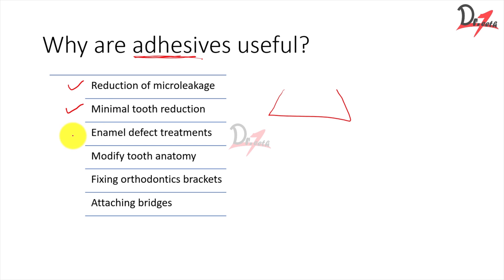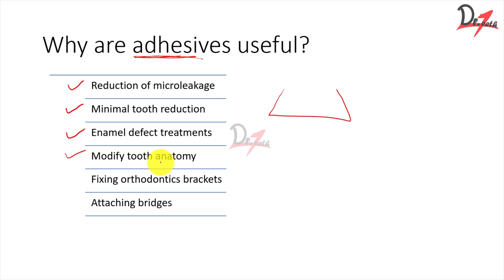We can treat enamel defects — discolored enamel can be masked by removing that portion and applying composite. We can also modify the tooth anatomy, fix orthodontic brackets, and attach bridges. That is why adhesives are useful and are here to stay.